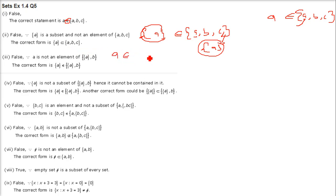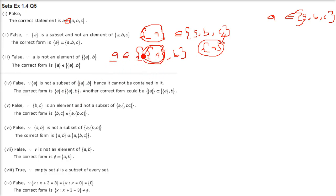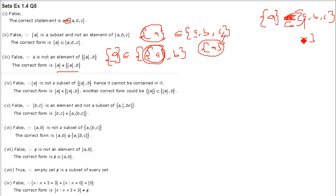Third: a ∈ {{a}, b}. Now a is not belonging here because this set contains {a} (a set) and b — not the element a directly. Neither does a belong, nor is it a subset. If you write {a}, then it belongs. To correct it: {a} ⊆ {{a}, b}, taking {a} out and putting a brace makes it a subset.